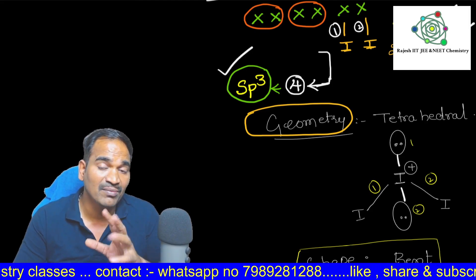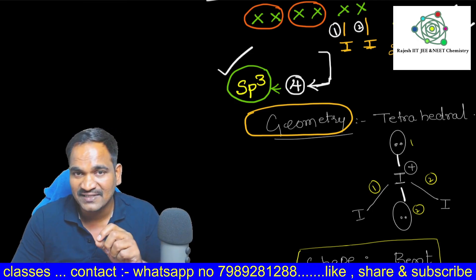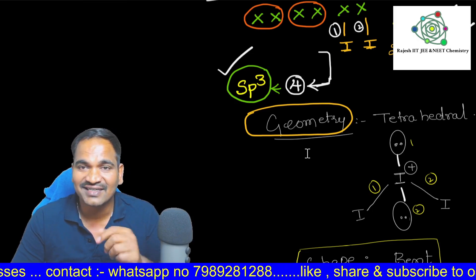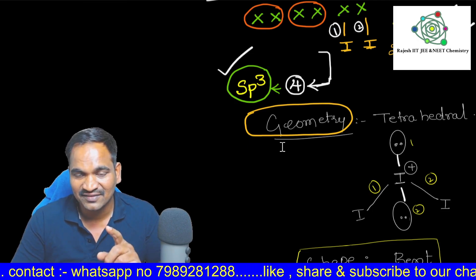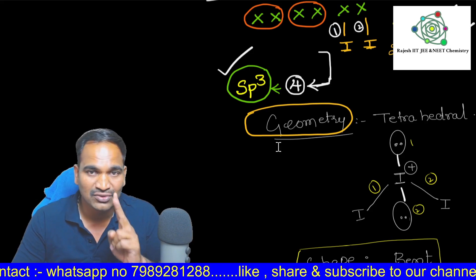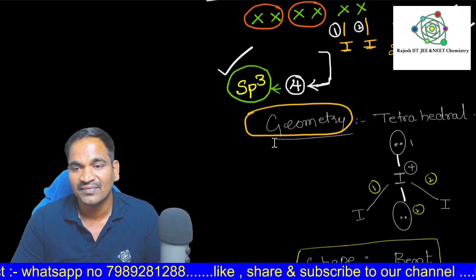What is the shape of, what is the geometry of this I3 plus? Here the geometry is tetrahedral. It is tetrahedral because 2 lone pairs, 2 bond pairs.